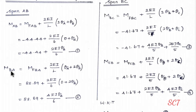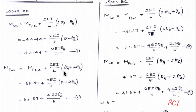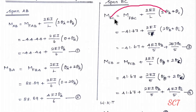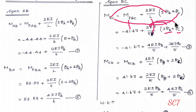Next, M_BA = M_F_BA + (2EI/L)(θ_A + 2θ_B). Since θ_A = 0, we get equation number 2. For M_BC = M_F_BC + (2EI/L)(2θ_B + θ_C), substituting M_F_BC and L = 5, we get equation number 3.